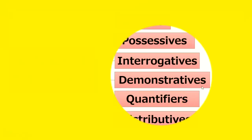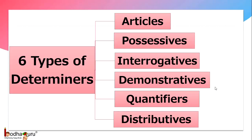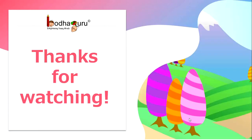So, remember there are six types of determiners: articles, possessives, interrogatives, demonstratives, quantifiers, and distributives. Thanks for watching. Bye-bye.